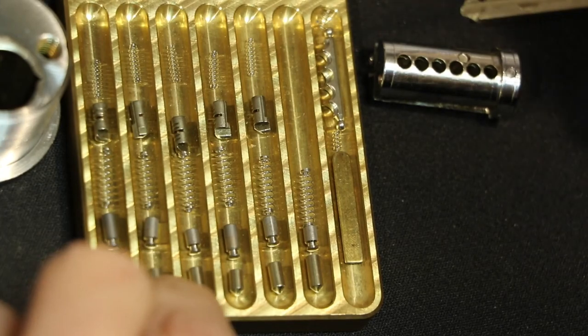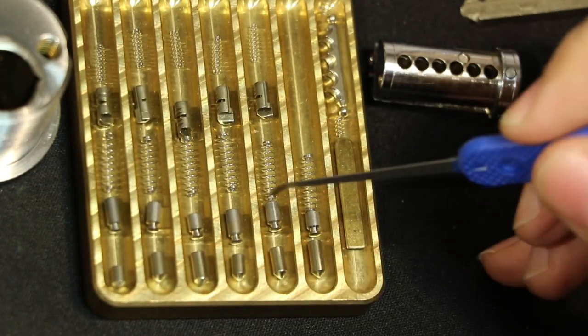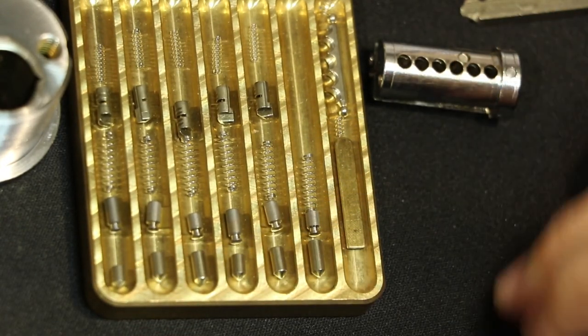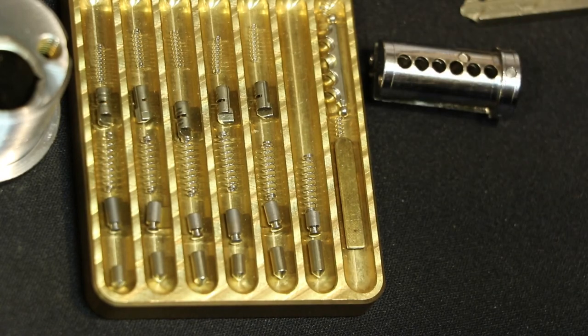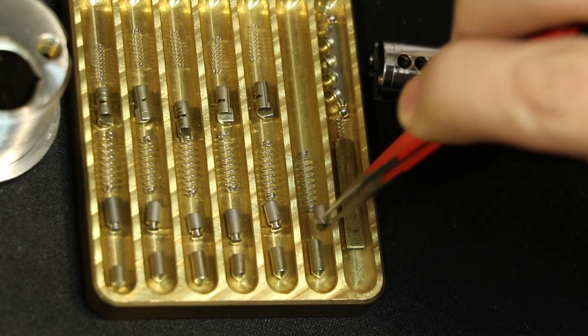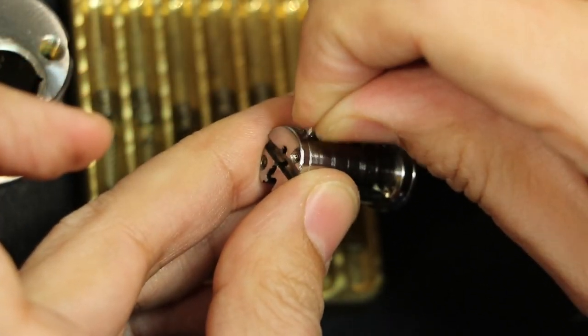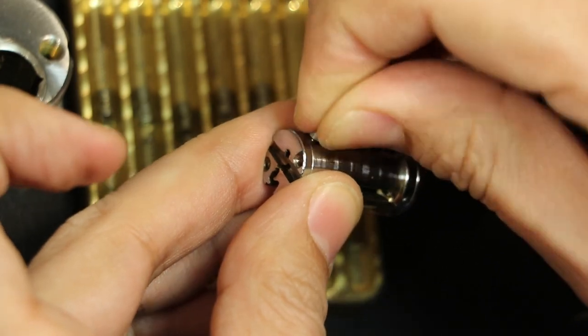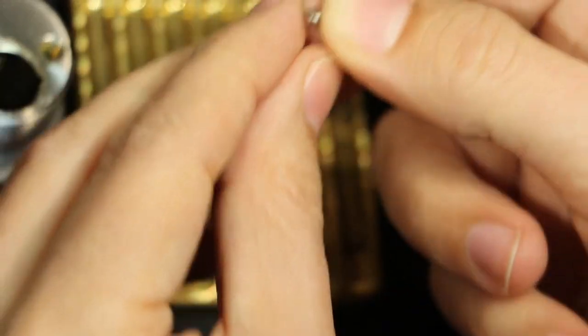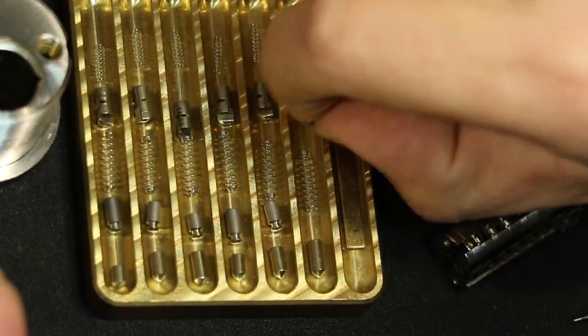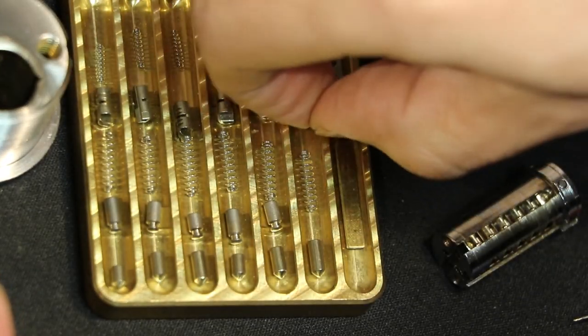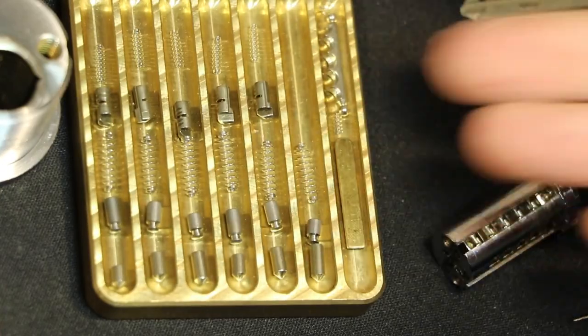So looking at these pins, all standard key pins, the gins, you know, this is what, if you take one of these, this is what catches in that counter milling right there like that, that little lip on what we call the gin bottle. Cause it's a little bottle of gin. So there we go.